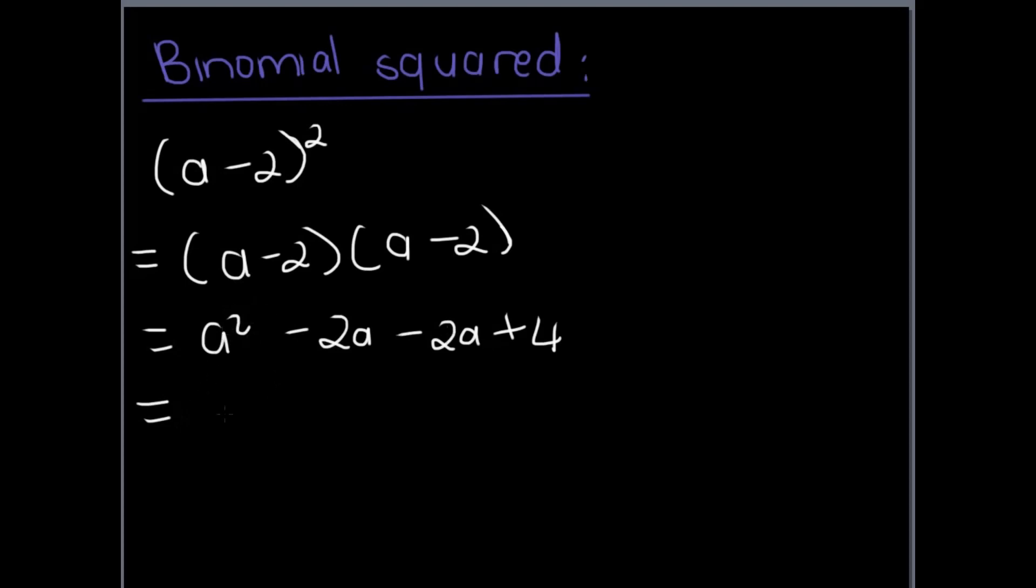We have a squared that remains the same, a minus 2 minus 2 which is minus 4a plus 4. Right? That's one way of doing it.